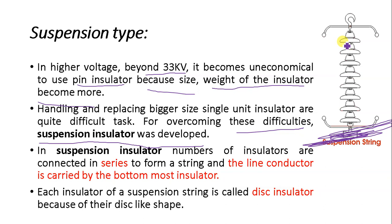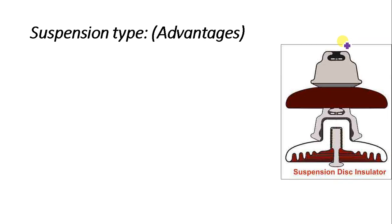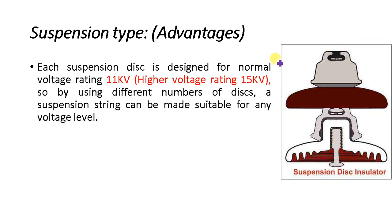Let us now discuss the advantages of suspension type insulators. Each suspension disc is designed for a normal voltage rating of about 11 kV, or up to 15 kV for higher rating discs. By using different numbers of discs, a suspension string can be made suitable for any voltage level. This flexibility is a major advantage over pin type insulators.